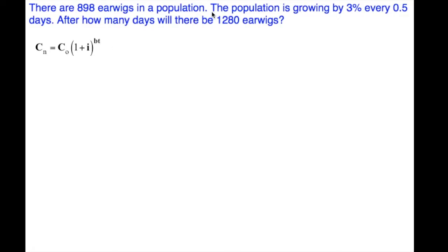First we have to figure out what b is. We're told that the population is growing by 3% every half day. Our period is every half day. Our b is 1 over the period. 1 over a half, the reciprocal of a half, is 2. 1 divided by 0.5 is 2.